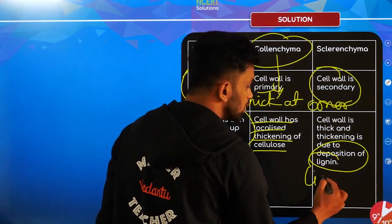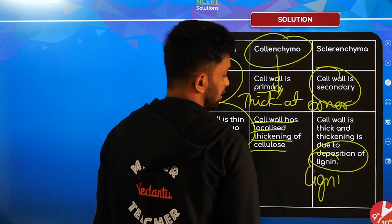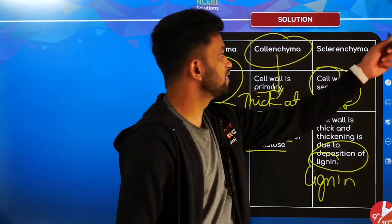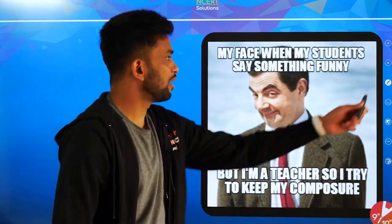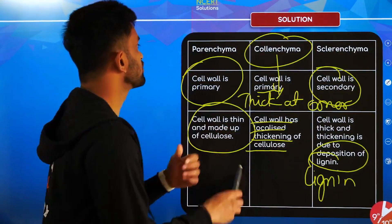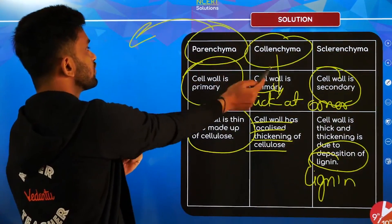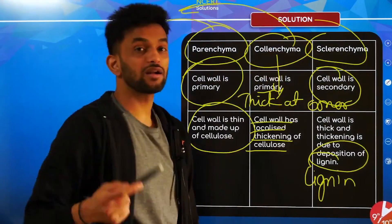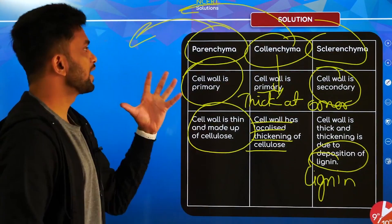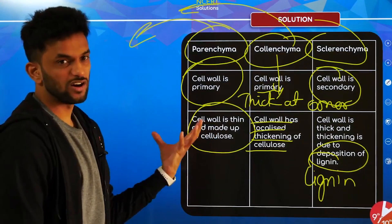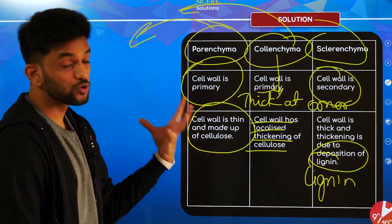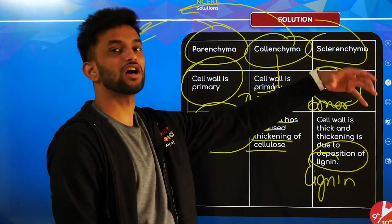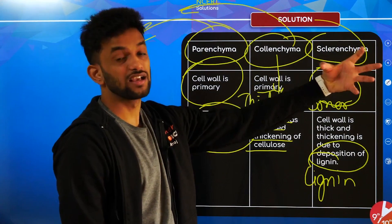Apart from that, you can add the function: parenchyma helps in storage of food, collenchyma provides flexibility, and sclerenchyma is found in hard parts of the plant. For location, parenchyma is in leaves and storage areas, collenchyma is in flexible parts of the plant, and sclerenchyma is in hard parts like nuts and their covering.